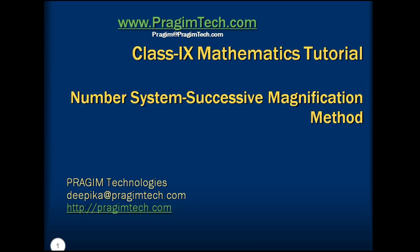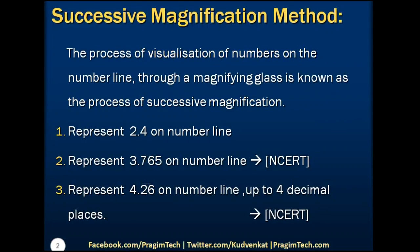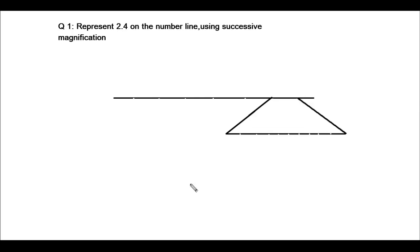Hello students, let's learn the successive magnification method. In previous sessions we discussed representation of rational numbers and irrational numbers on the number line. To locate a decimal point we will use a magnifying glass — such a method is known as successive magnification. Let's understand this by solving the following examples.